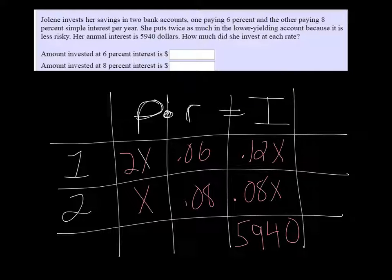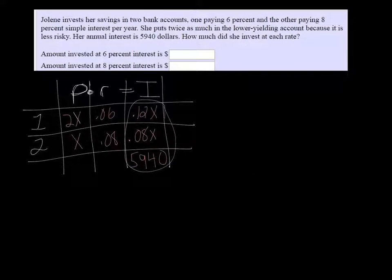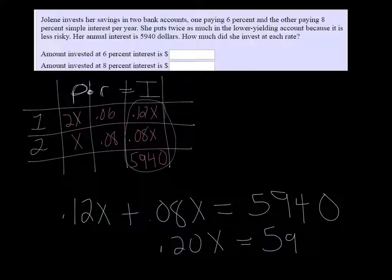And I can use that last column, the interest column, to make my equation. So the equation would be 0.12X plus 0.08X equals $5,940. Combining those, it's 0.20X equals 5,940.